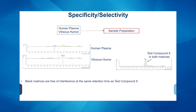The first criteria we looked into was specificity and selectivity. After conducting sample preparation, we observed chromatograms from both blank human plasma and blank vitreous humor. We wanted to ensure that the retention time where test compound X elutes is not present in either matrix. As you can see in the left panel, in both human plasma and vitreous humor, we do not see a peak for test compound X. On the right, you can see a chromatogram of how test compound X looks when present in the sample, confirming the specificity and selectivity of this method.